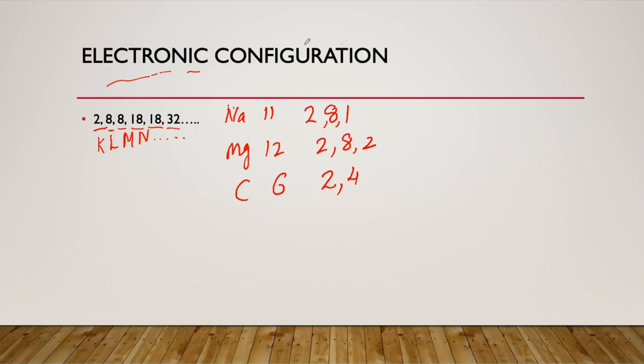So you all know how to write electronic configuration. The first shell can have maximum 2 electrons, then 8, then 8 and so on. If I ask you to write argon's electronic configuration, you all know that argon's atomic number is 18, so its electronic configuration is 2, 8, 8. That means 18 total: 2 plus 8 is 10, plus 8 is 18. This is very important because when you want to find the group or period of any element, you need to know its electronic configuration first.